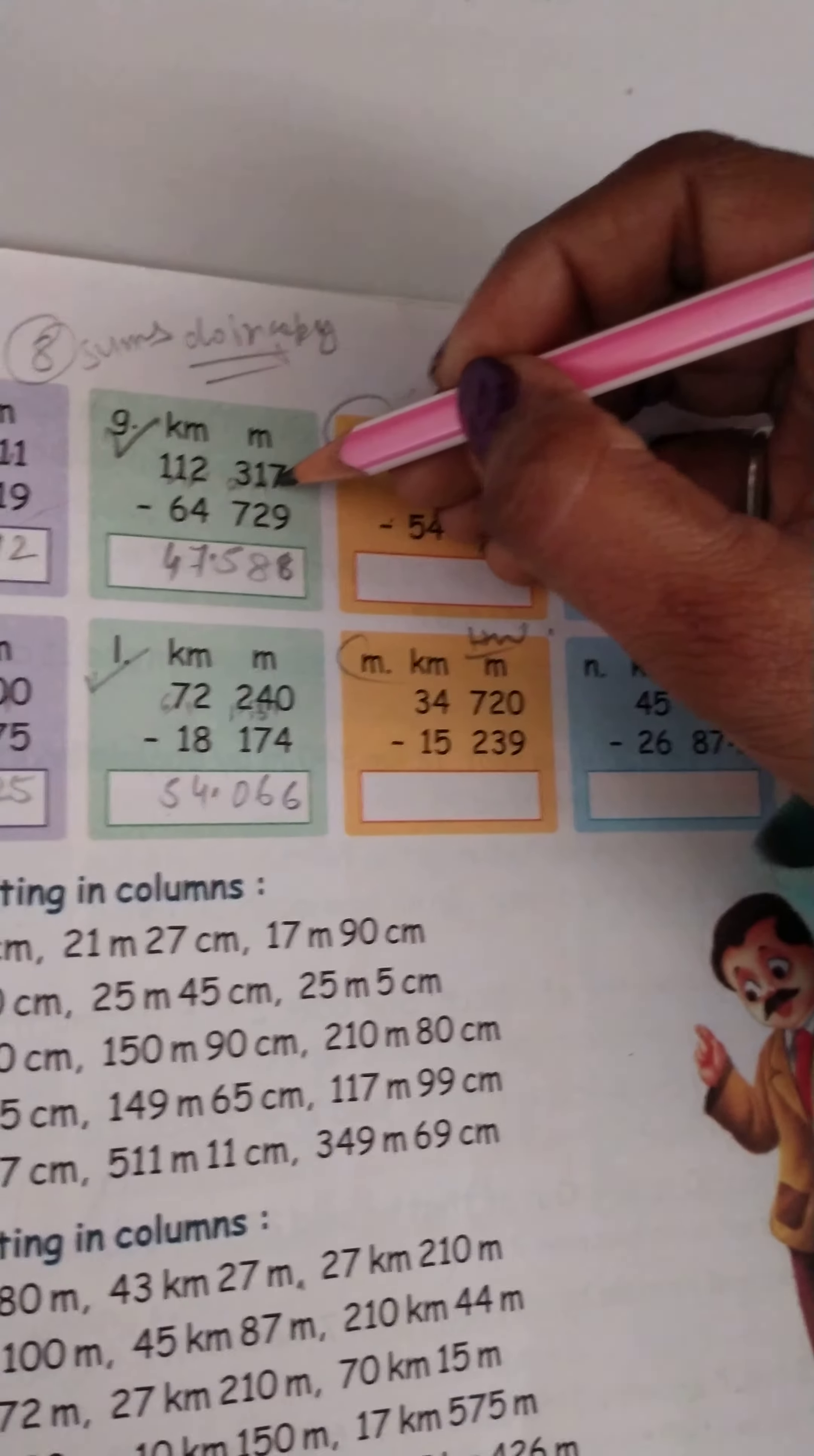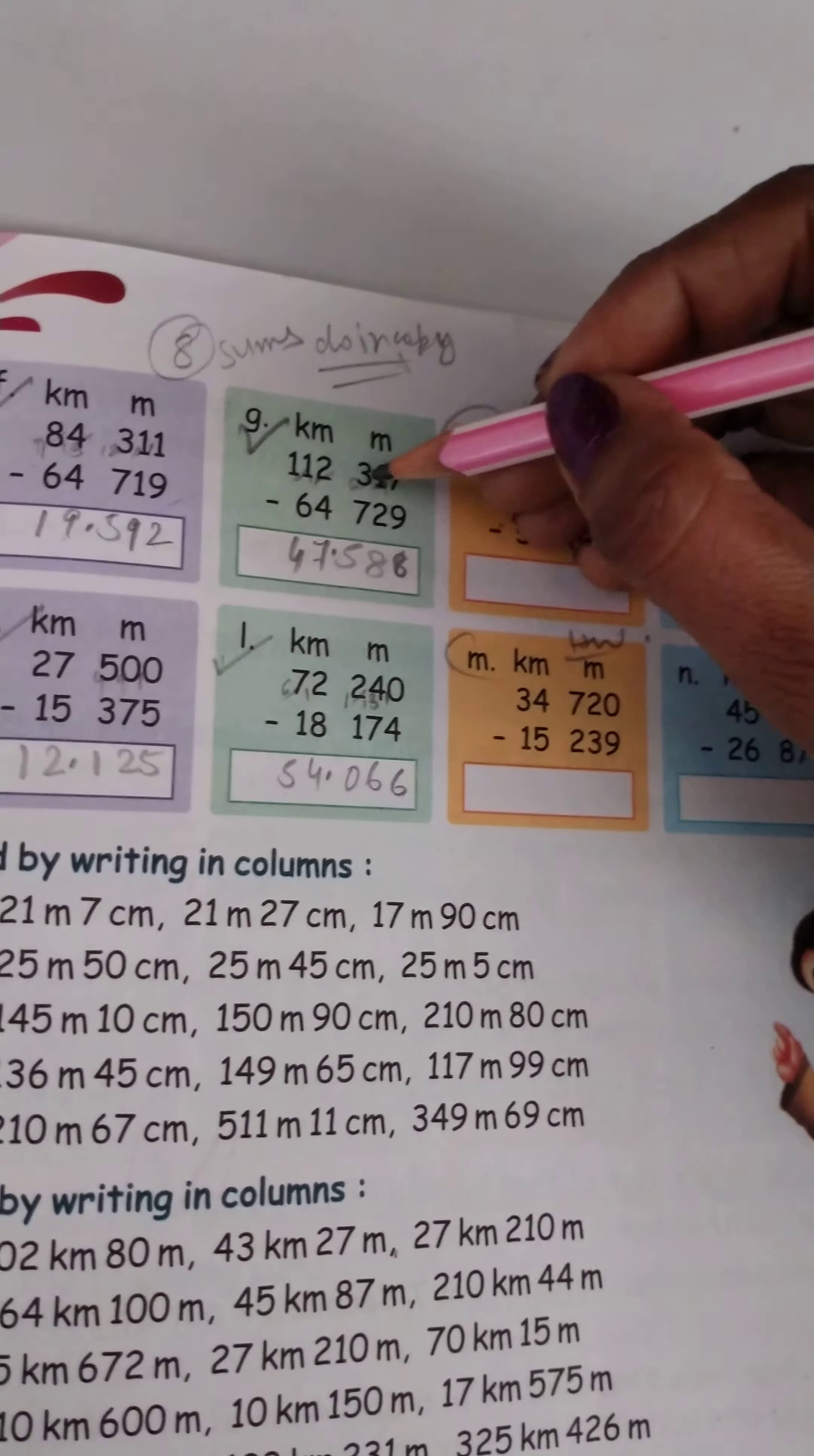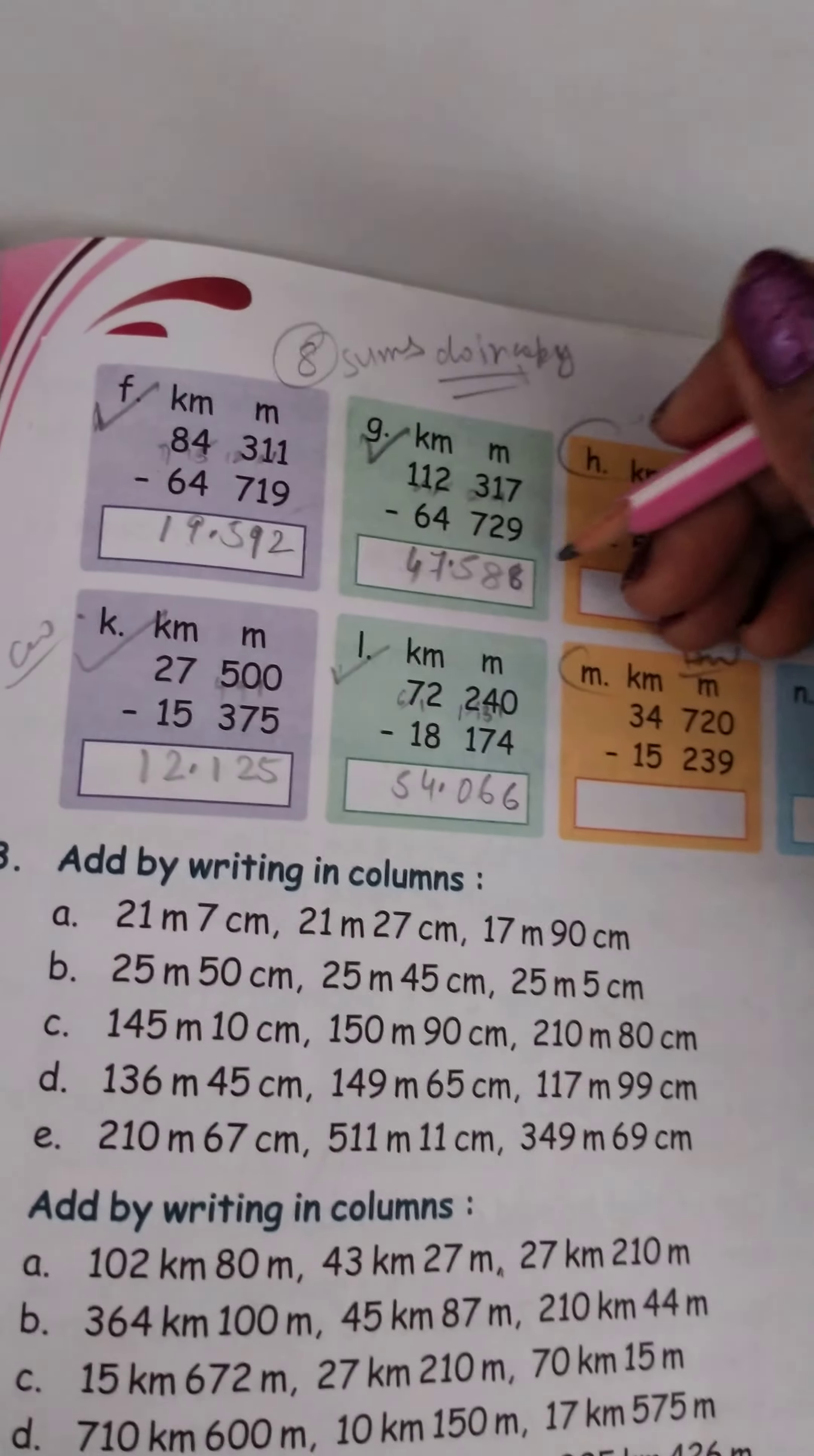Question number G. 17 minus 9 is equal to 8. 10 minus 2 is equal to 8. 12 minus 7 is equal to 5. 11 minus 7 is equal to 4. 11 minus 4 is equal to 7. 10 minus 6 is equal to 4.